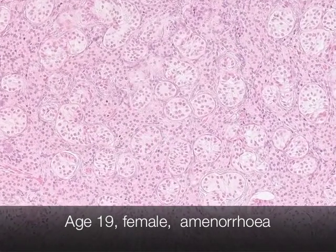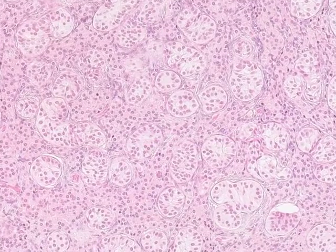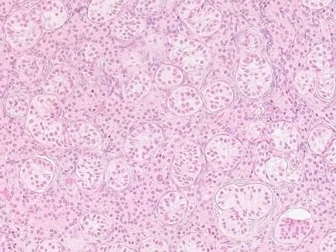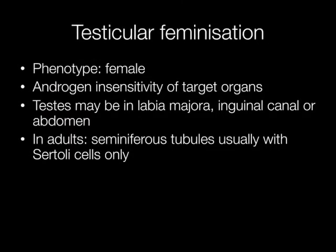The final case is an example of testicular feminisation. The phenotype is obviously female, and it is due to androgen insensitivity of the target organs. The testes may be present either in the labia majora, inguinal canal or in the abdomen. In adults the seminiferous tubules usually contain Sertoli cells only.